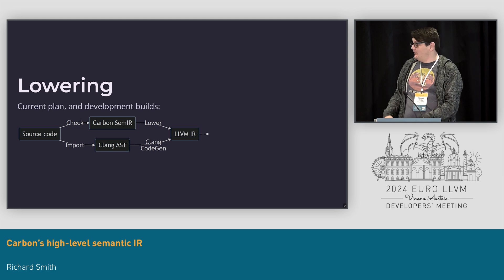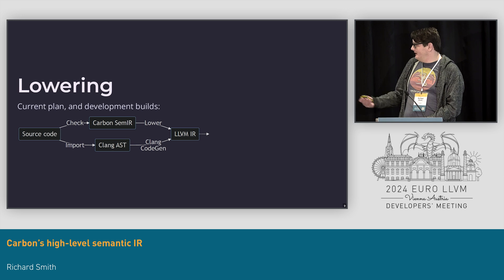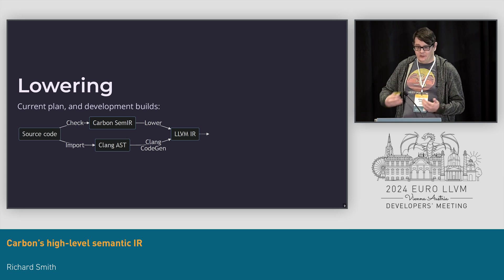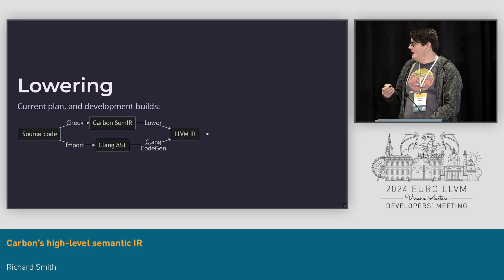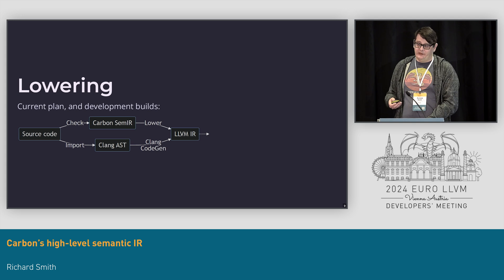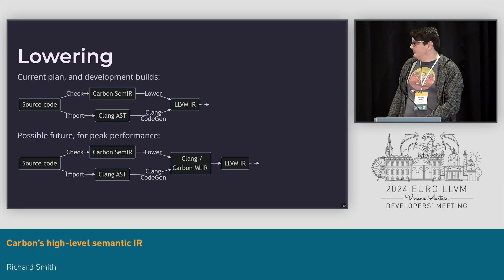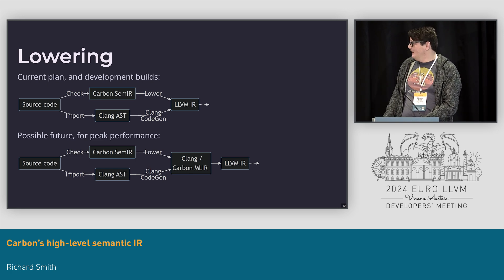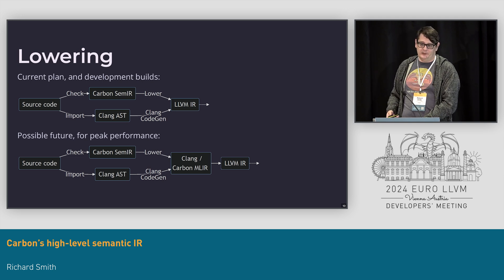After we have SEMR, what do we do next? Right now the plan is we lower directly to LLVM IR, and we also invoke Clang as part of our interop story, which also produces LLVM IR. That's looking like it's going to work pretty well for us. But for peak performance, something we might consider in the future is going via an MLIR dialect for a combined Carbon and C++ representation, though we probably wouldn't do that for development builds because we really care about performance there.